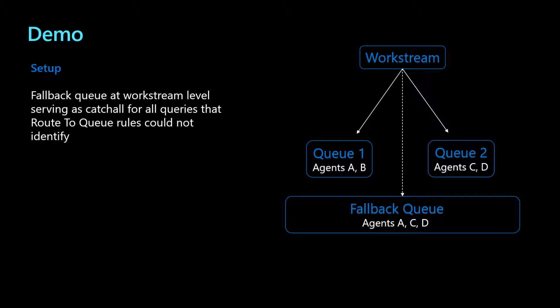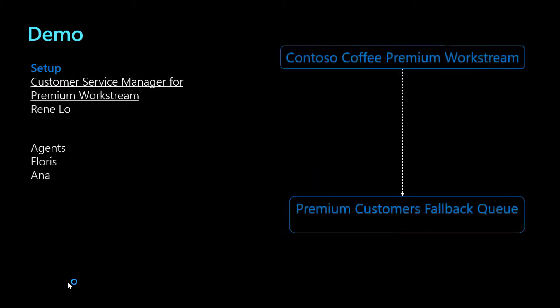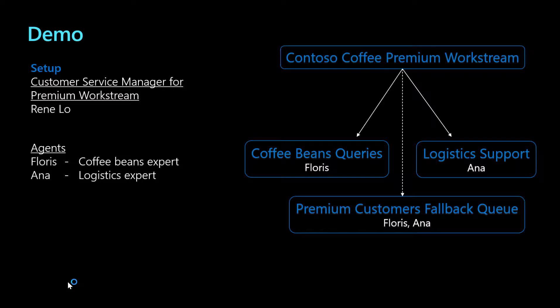She is glad that the org will no longer rely on one single default queue. Now in this premium group, Renee manages two experienced customer service representatives, Flores and Anna. Flores herself is a coffee connoisseur, so she loves helping customers find their choice of coffee beans. Anna is a logistics expert, and she handles all shipment and delivery related queries.